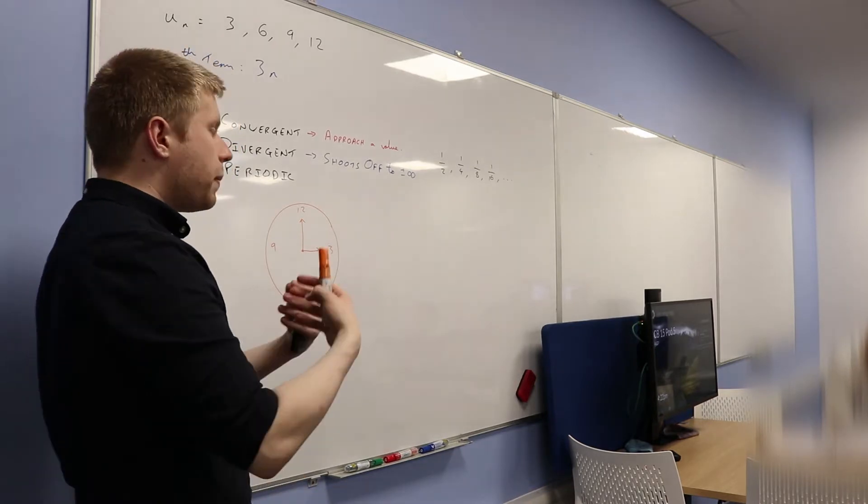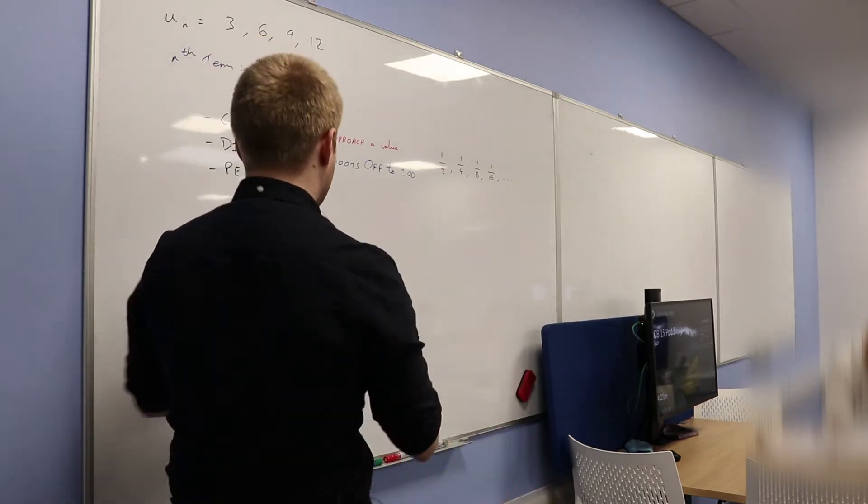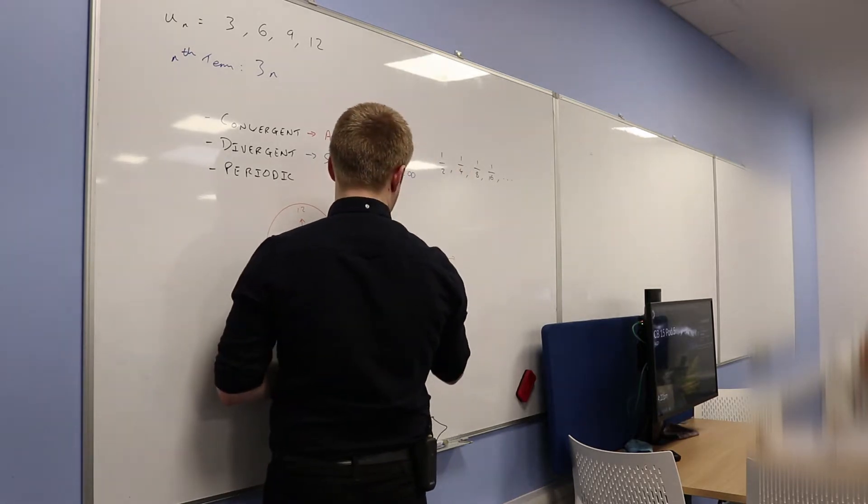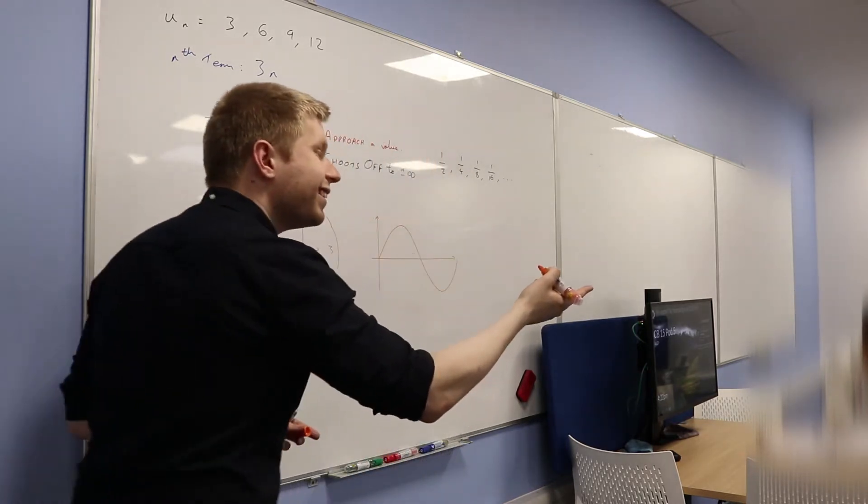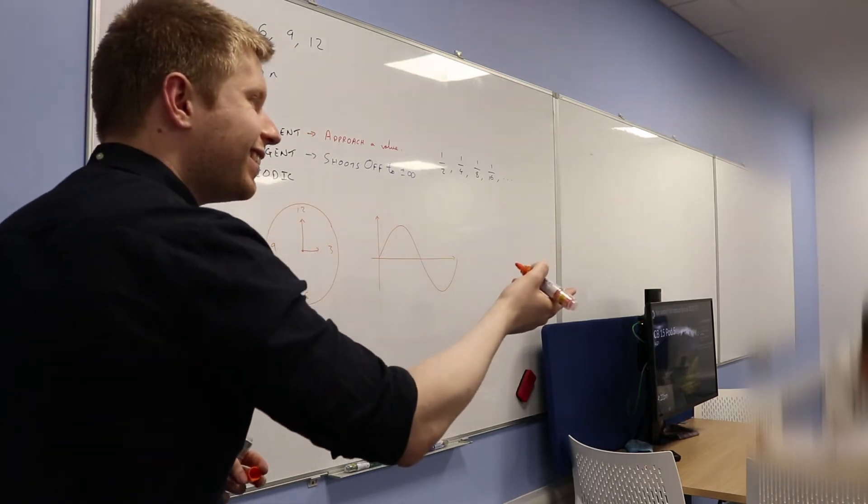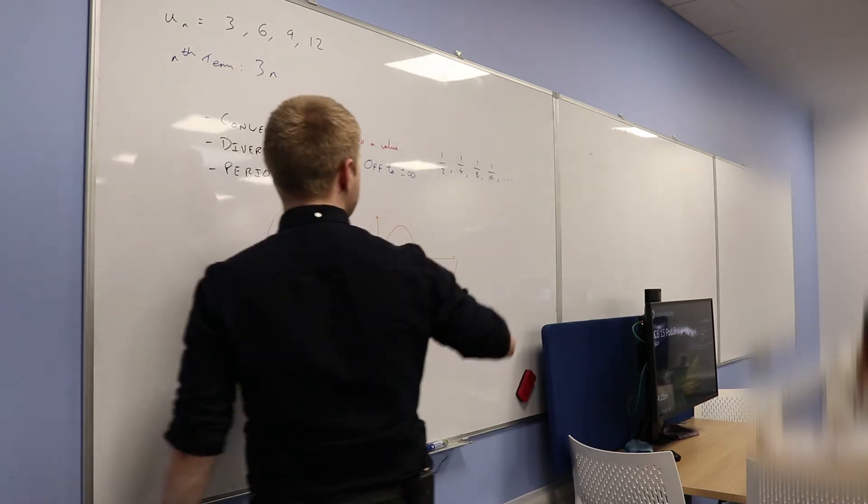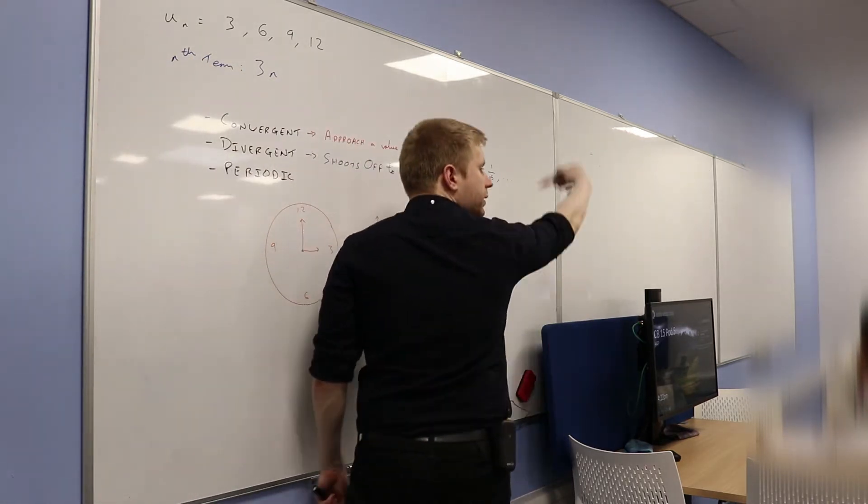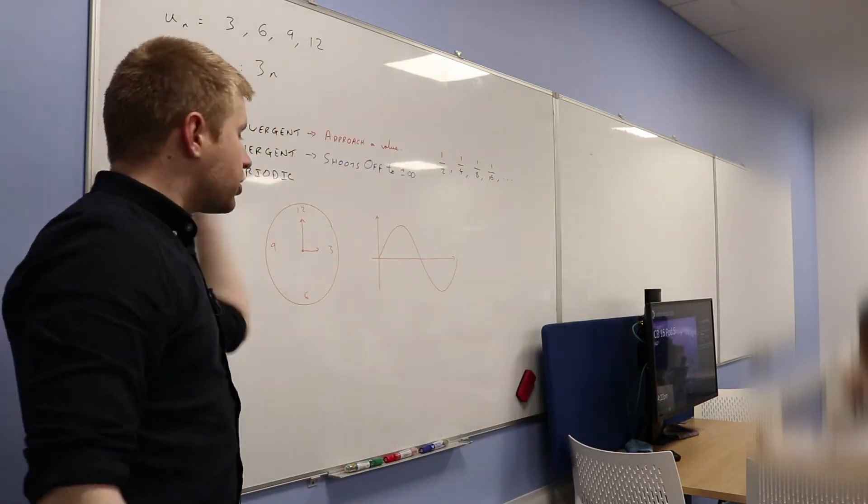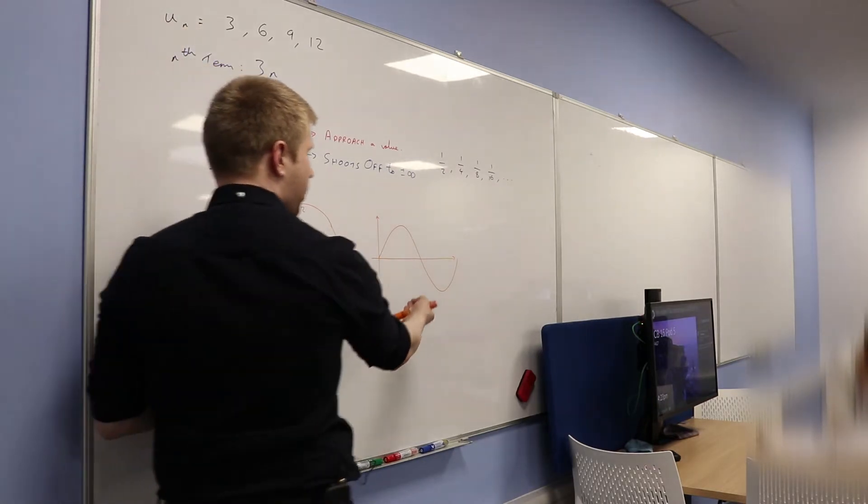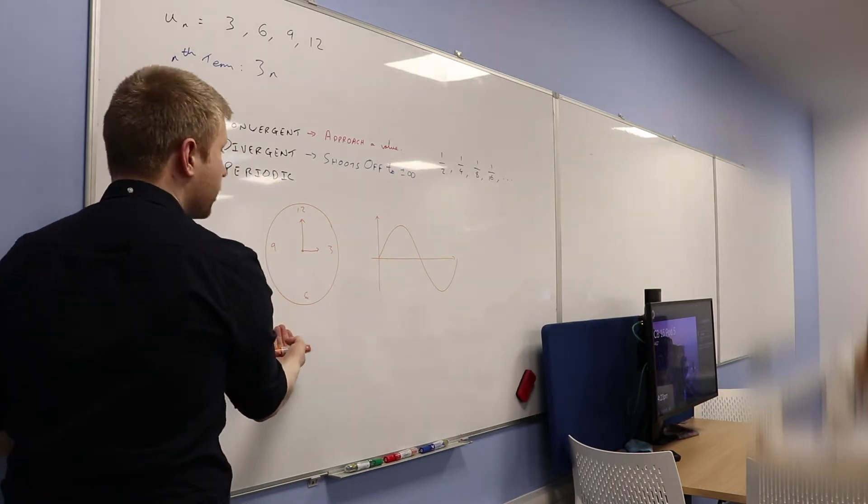In fact, I can talk about a periodic function. A periodic function would be something like this. Sorry? Go on, say it. Yeah, exactly. This is the graph y equals sine x. We've looked at this, yeah? It's periodic because it would just keep going up and down and up and down forever and ever and ever. Even in that direction, it's still going up and down. So are you happy this would be a periodic function? This would be an example of something which is periodic.